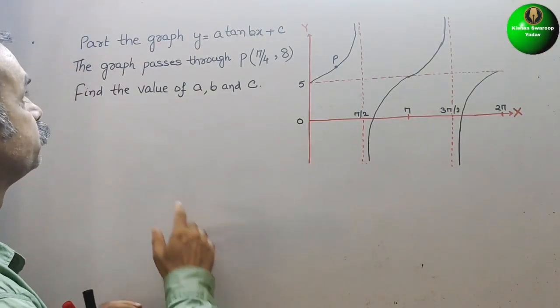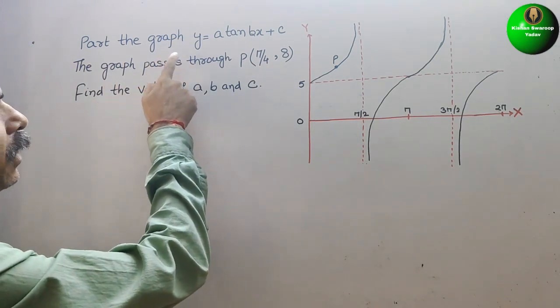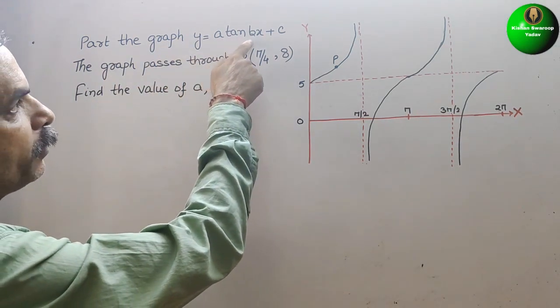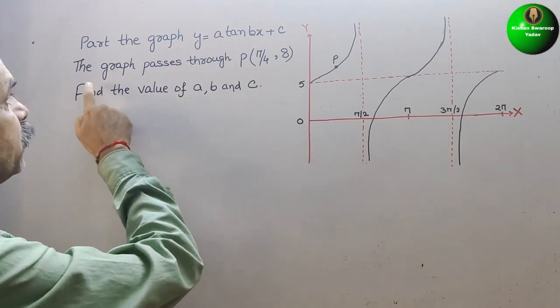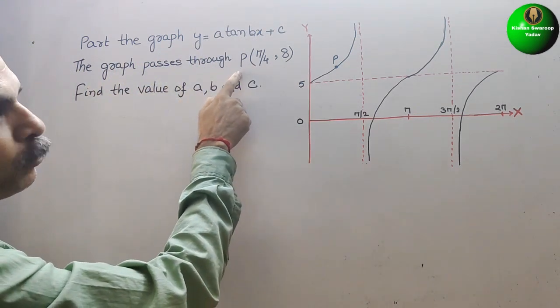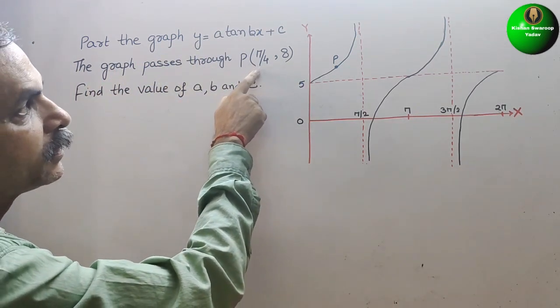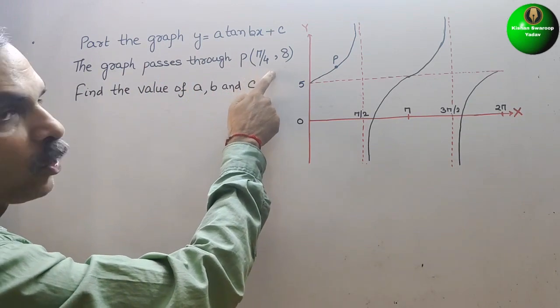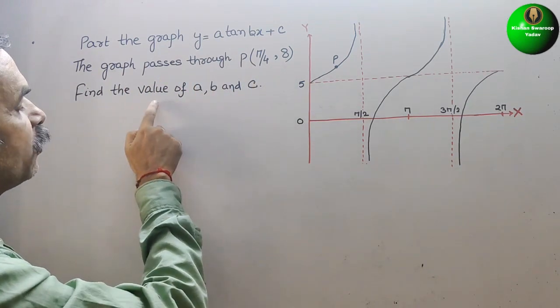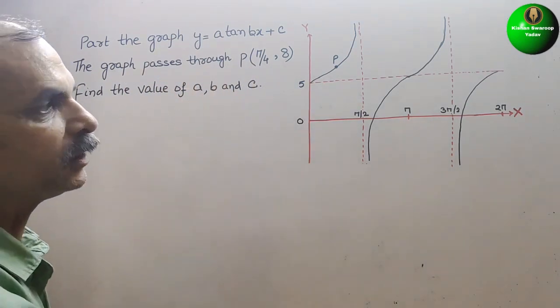Your question is, plot the graph y equals a tan bx plus c. The graph passes through P, that is pi by 4 comma 8. Find the value of a, b and c.